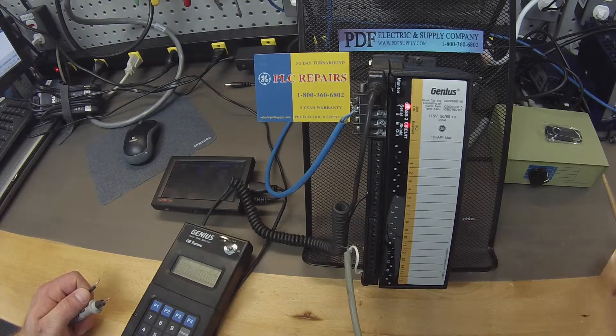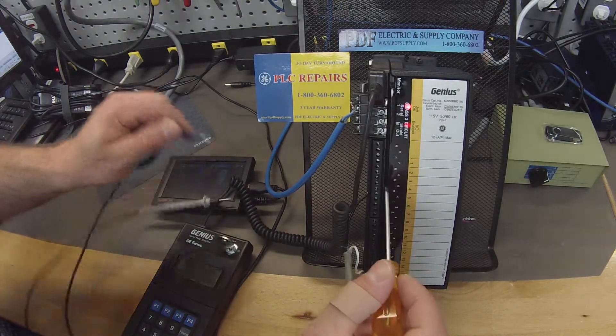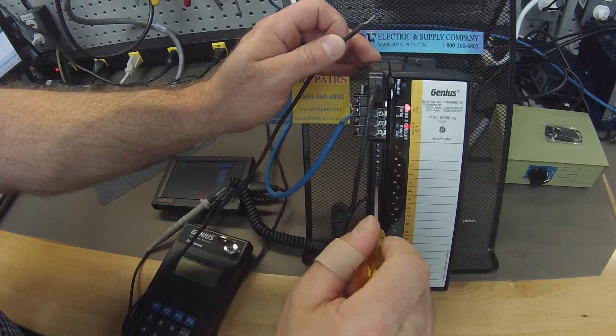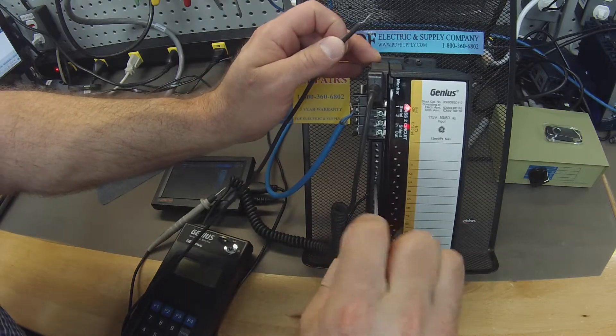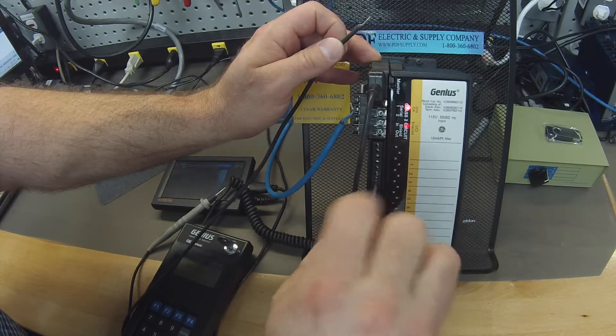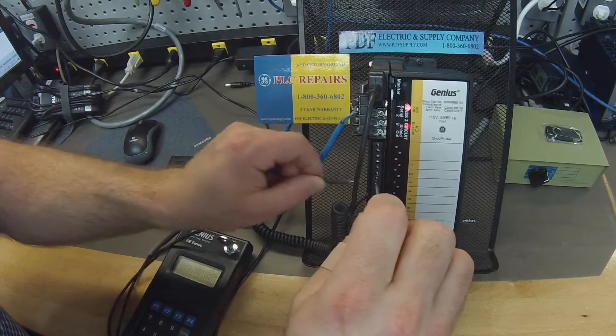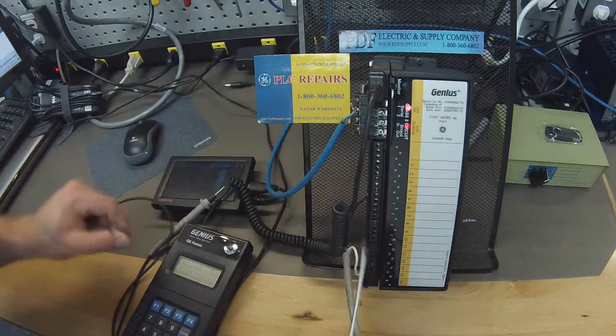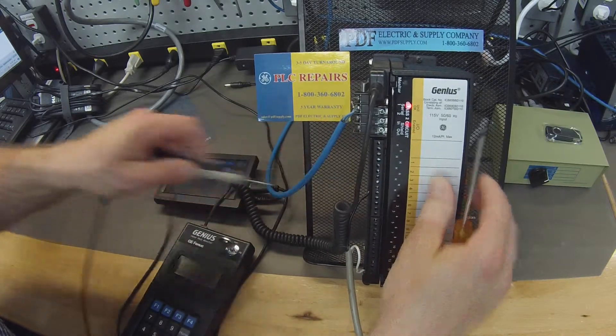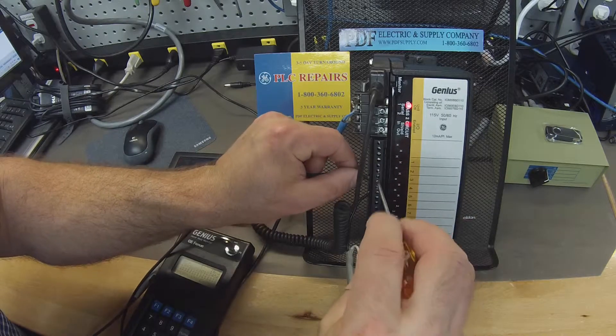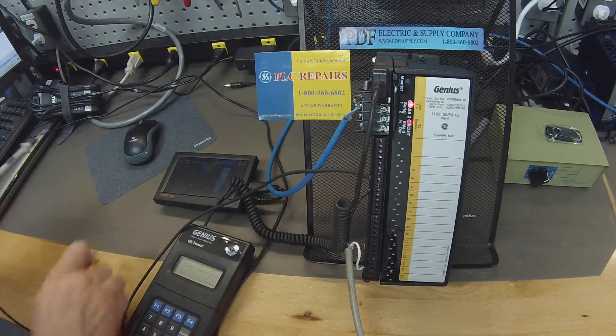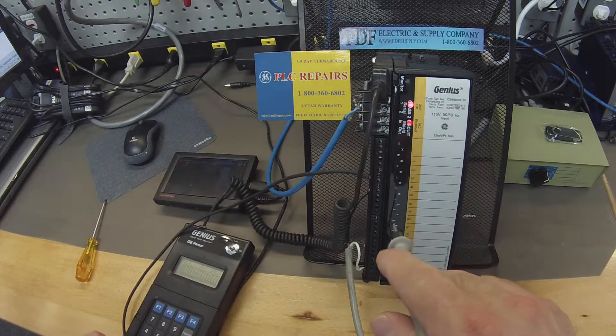Now, what you want to do is take your input probe and I'm going to secure this to screw number 13. Now, I have a live probe, a hot lead that I can touch to all my inputs.